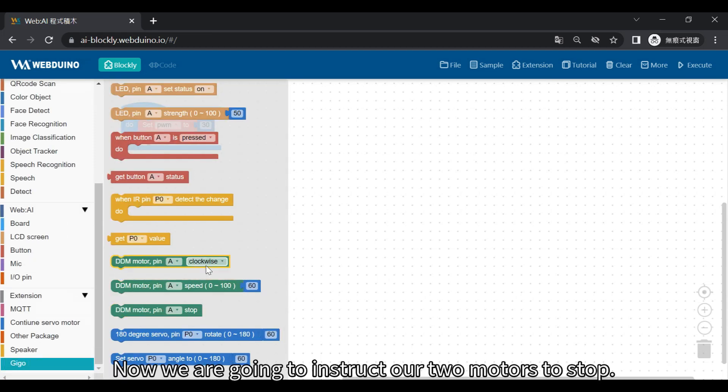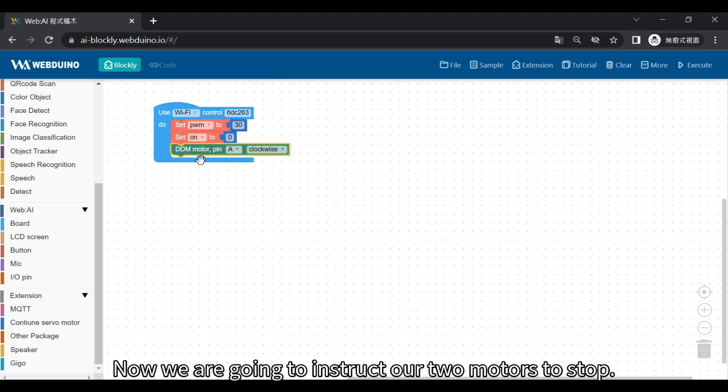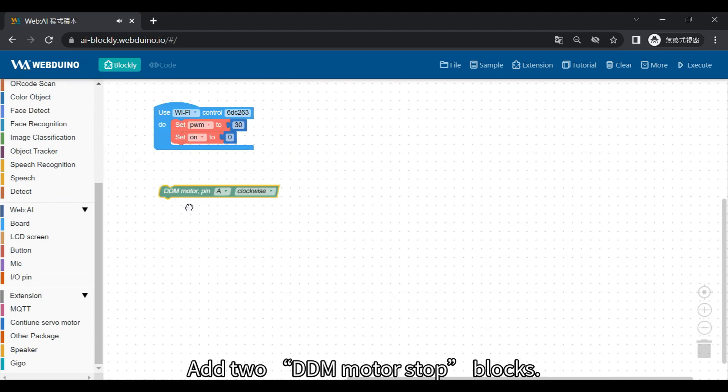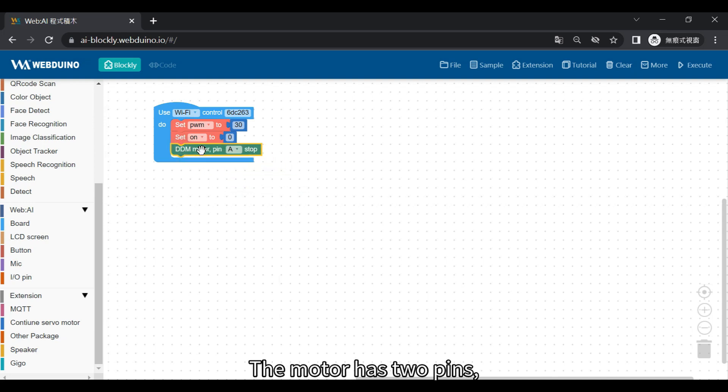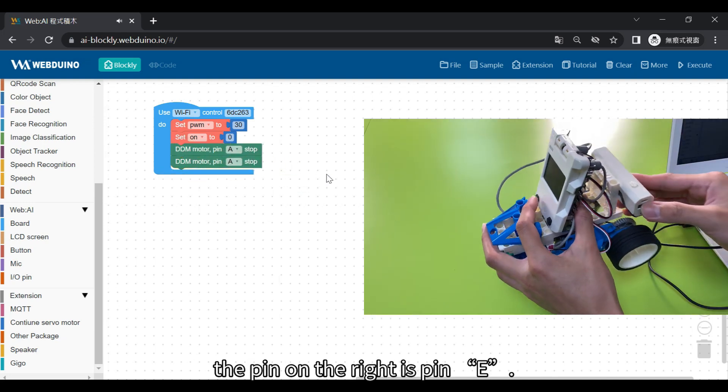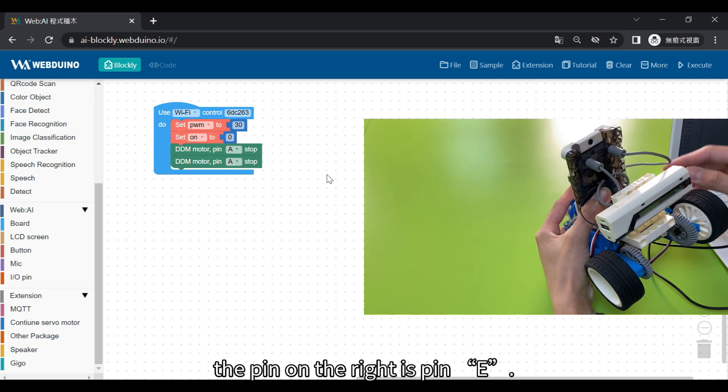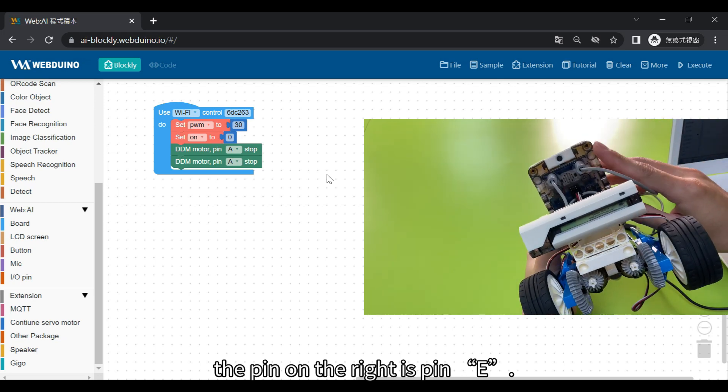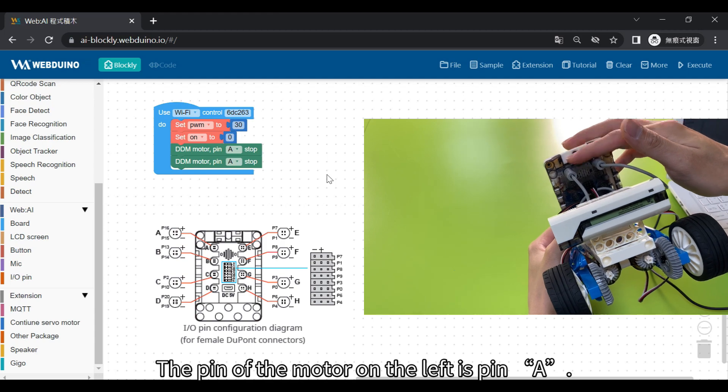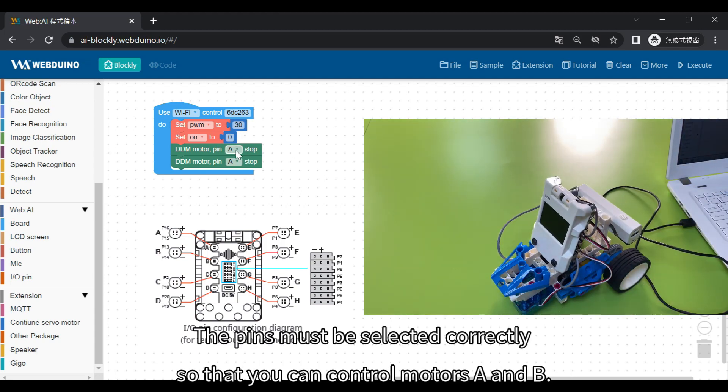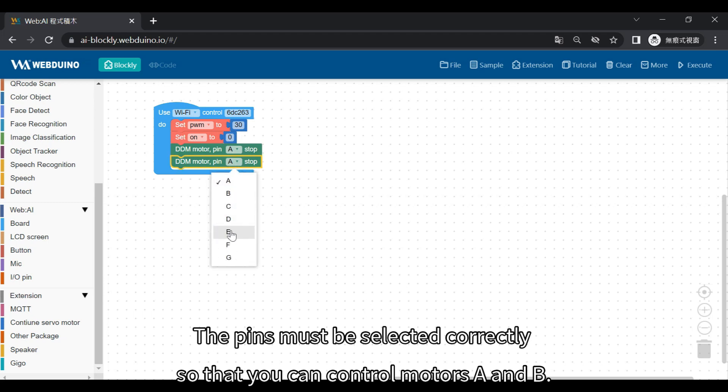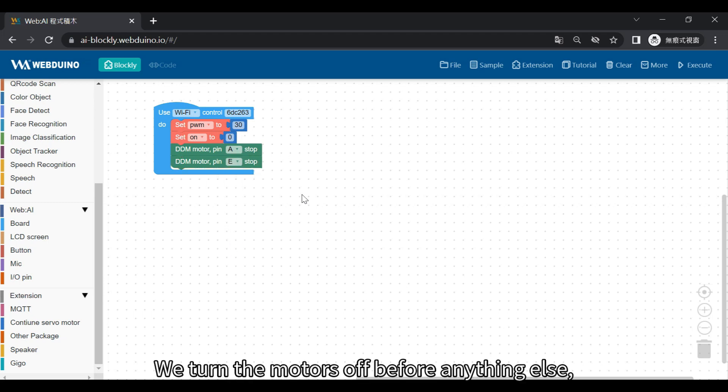Now we are going to instruct our two motors to stop. Add two DDM motor stop blocks. The motor has two pins. The pin on the right is pin E. The pin of the motor on the left is pin A. The pins must be selected correctly so that you can control motors A and B. We turn the motors off before anything else to prevent accidental activation.